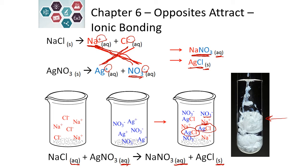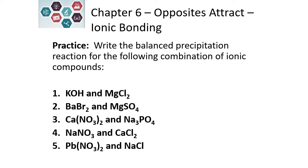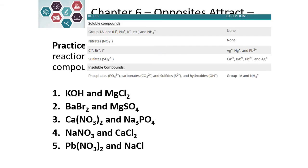However, this will not always be the case and you may need to add coefficients to balance the reaction. Let's try an example of writing balanced precipitation reactions. We have ionic compounds and want to see if combining them forms a precipitate. We'll start by checking our solubility rules. Potassium hydroxide — potassium, no matter what it's attached to, is always soluble, so KOH will be an aqueous solution.